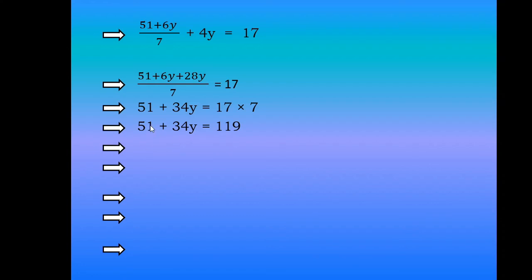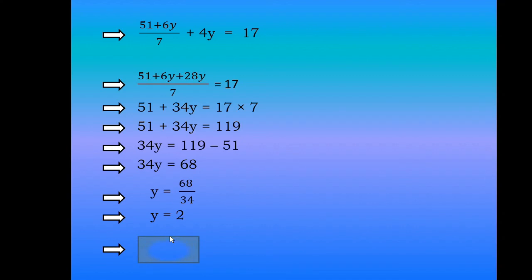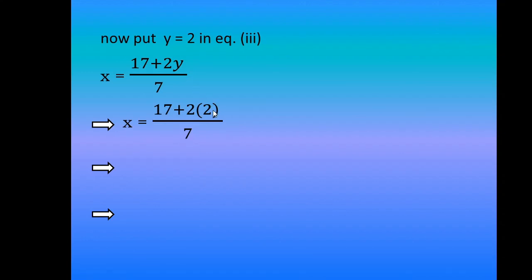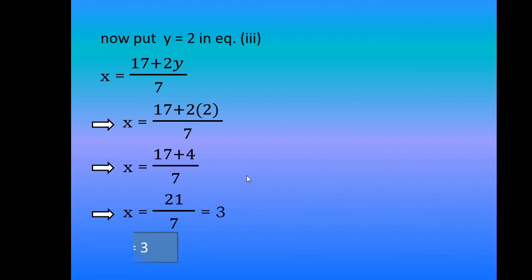To find the value of y, we move constants together, so 34y equals 68. Dividing both sides by 34 on the other side of the equality, we get y equals 2. Now to find the value of x, we put this value of y into one of the three equations — equation 1, 2, or 3. I have chosen equation 3. Putting y into equation 3: we have (17 plus 4) over 7, which is 21 over 7, equals 3. So the value of x is 3. Hence we have a solution set (3, 2).